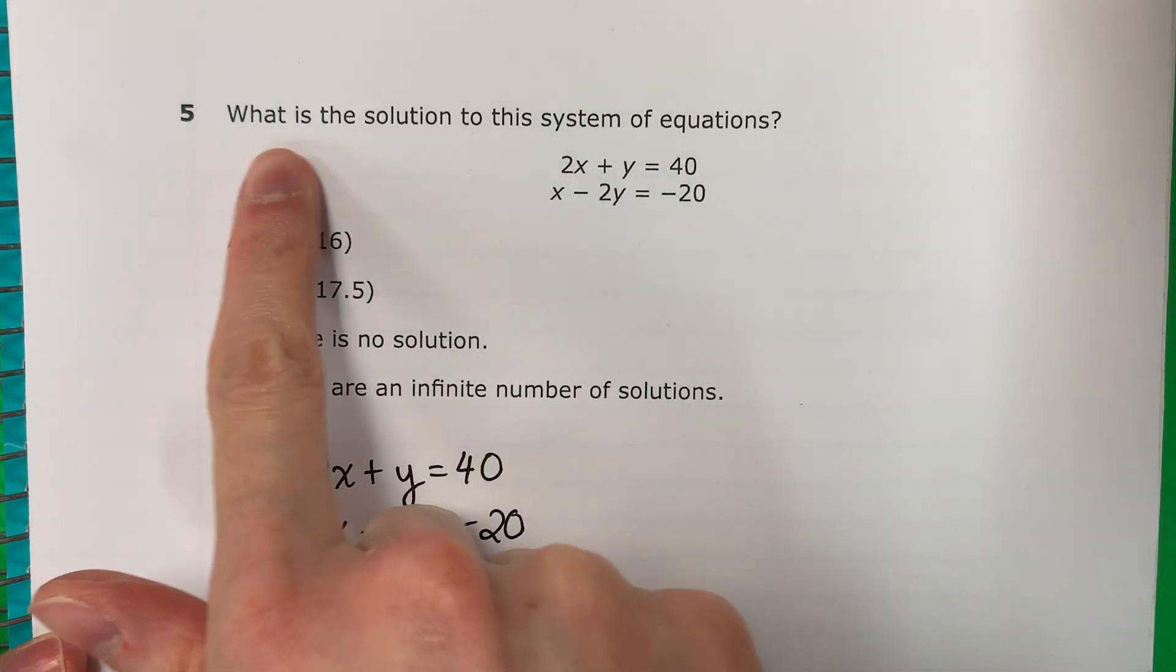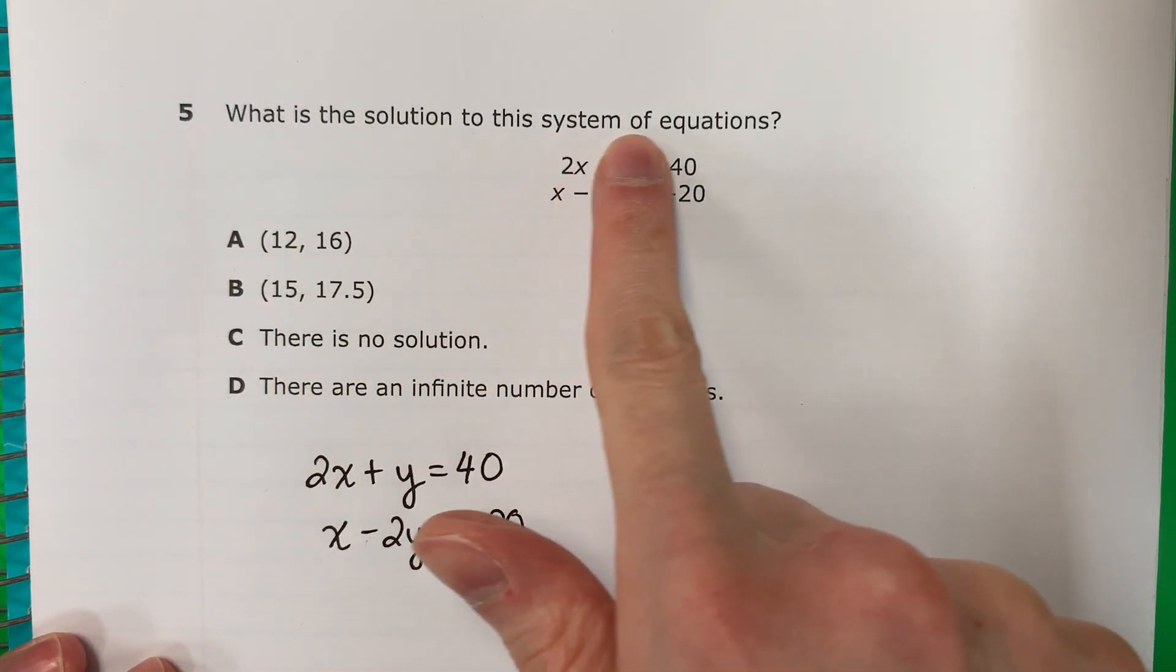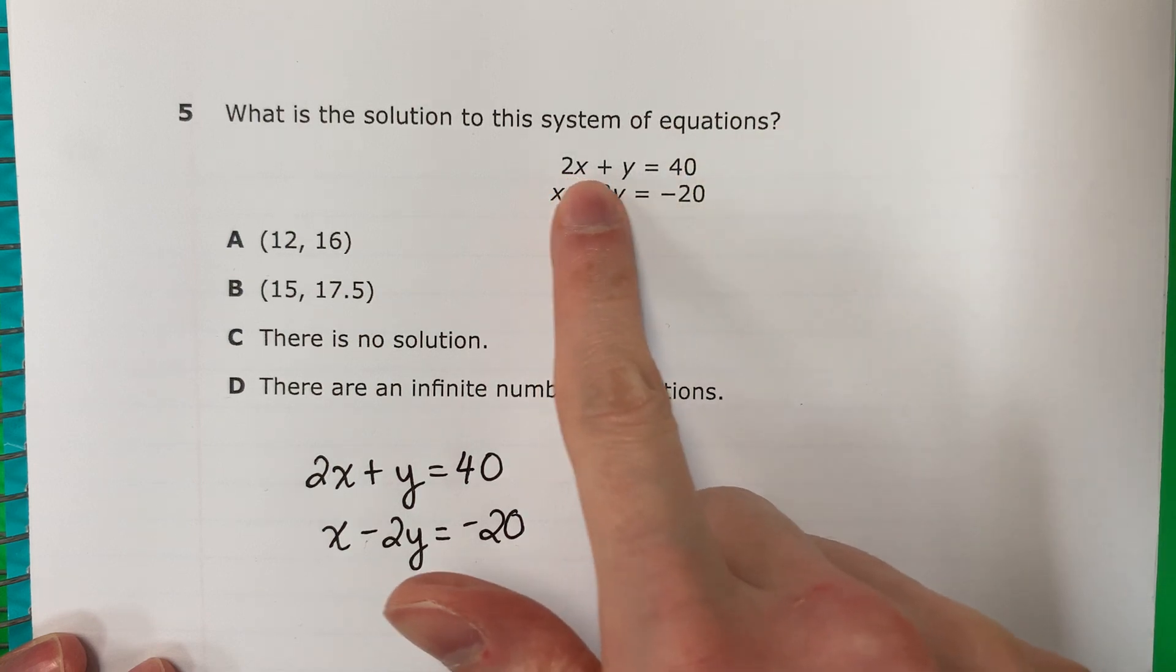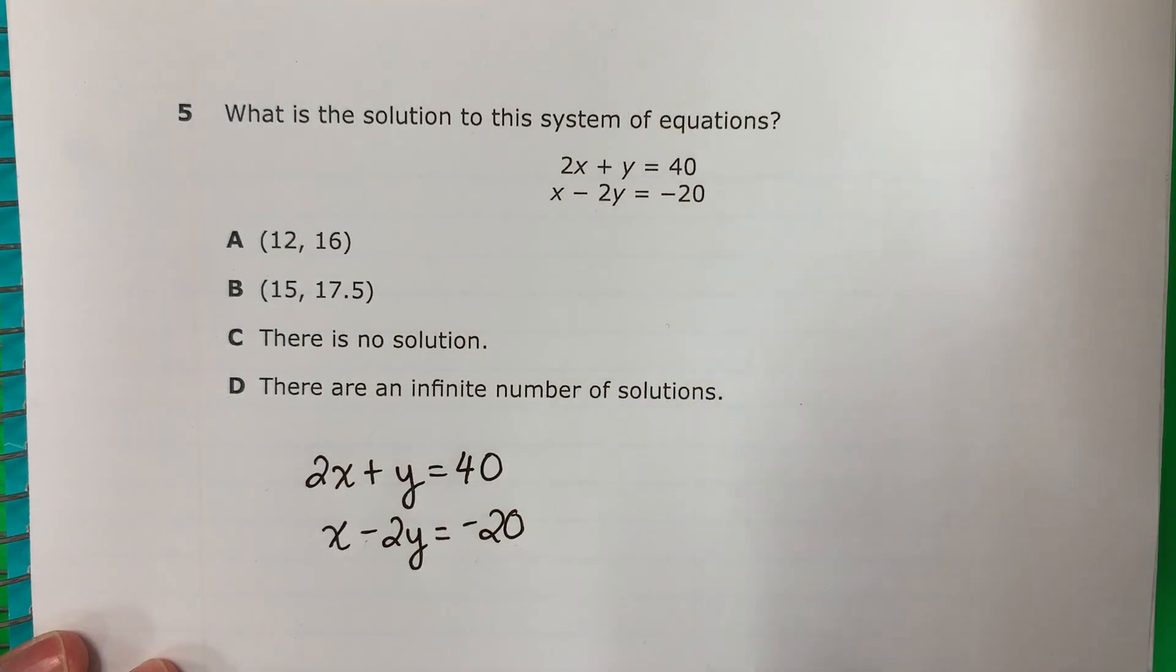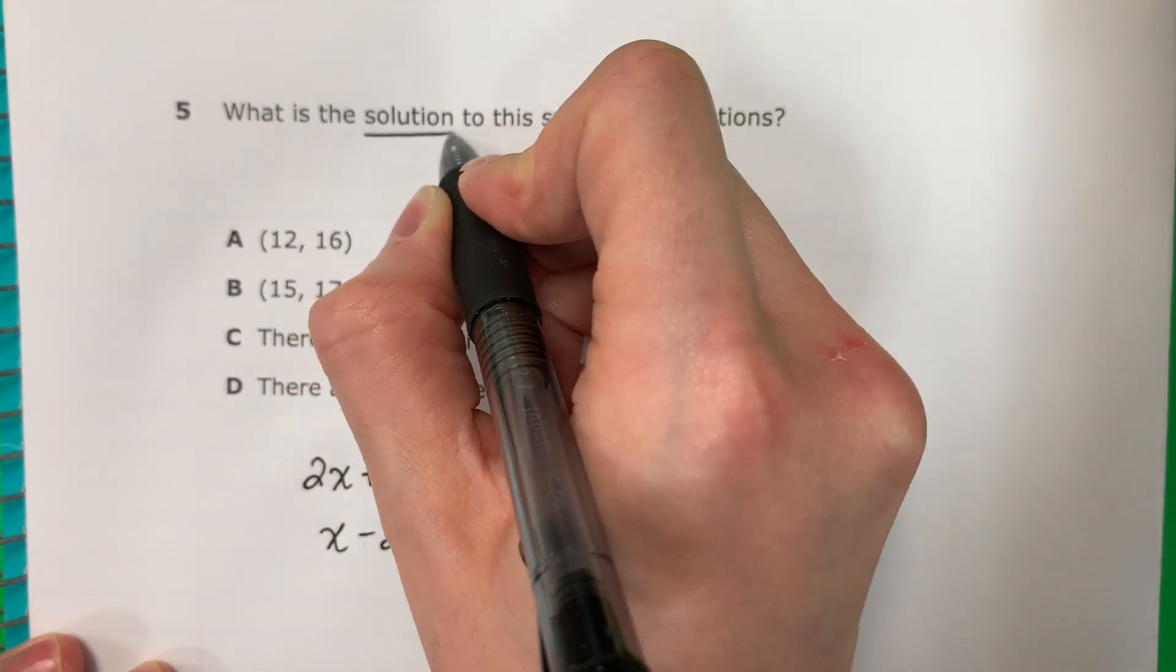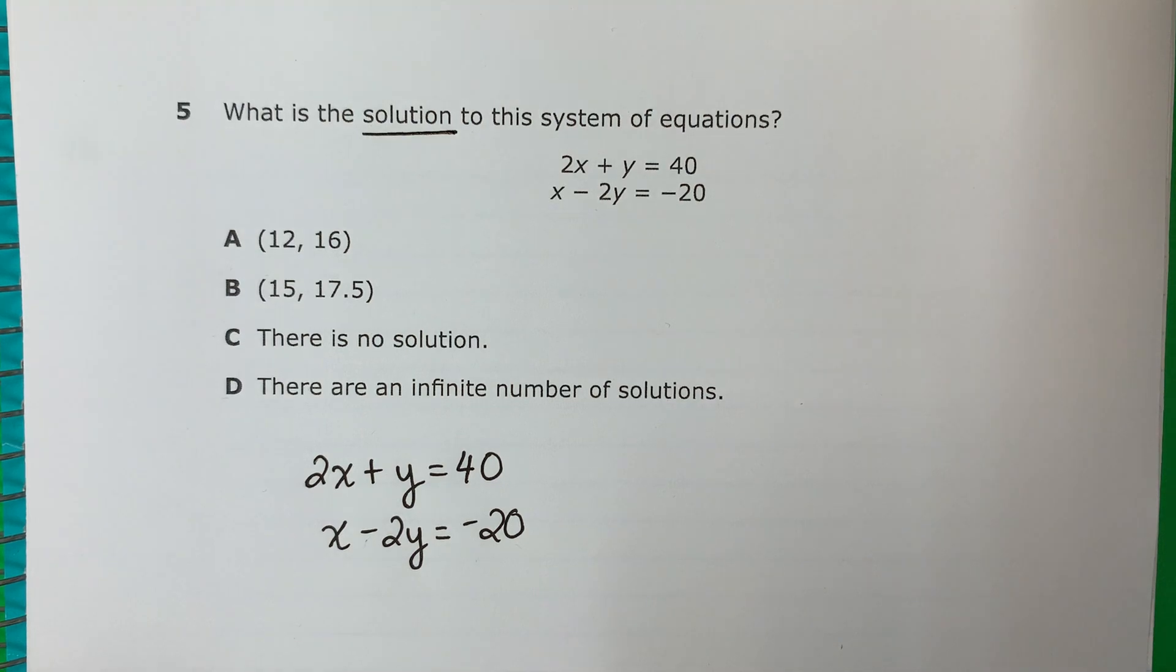Question 5. What is the solution to this system of equations? 2x plus y equals 40, x minus 2y equals negative 20. So I need to find the solution. Necesito encontrar la solución.